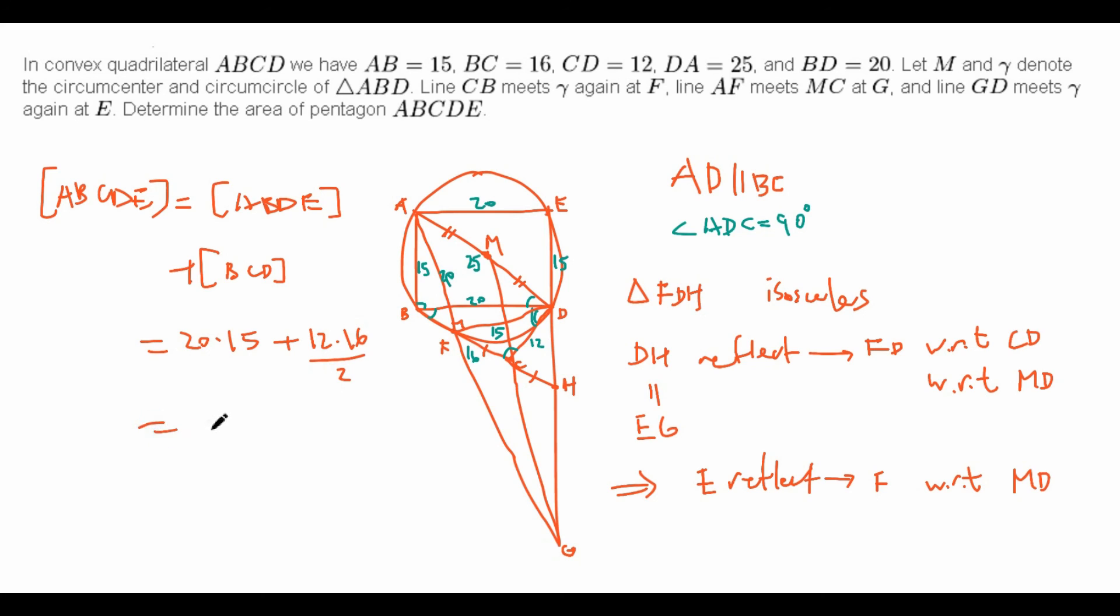Which is just equal to, well, 20 times 15 is 10 times 30, which is 300, plus 12 times 16 is 12 times 8, divided by 2 is 96, which is finally 396. And we are done.